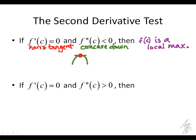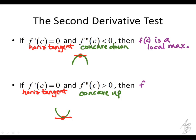Alternatively, if it's concave up at a horizontal tangent, then it's going to be a local minimum. So if it has a horizontal tangent and it's concave up — as would be indicated by a positive second derivative — we could draw a picture of what that's going to look like. At the point it's going to have a horizontal tangent, but it's concave up, so it's going to be a local minimum. We can use the second derivative test to determine if a critical point is a local minimum or local maximum.